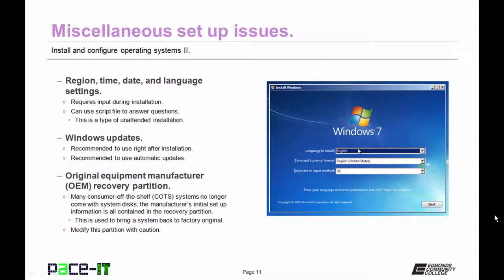When setting up a PC, remember you need to know what region you're in, the time, the date, and what language settings you're going to use. These are required inputs during installation, and you can use a script file to answer those questions. Then there's Windows Update — it is recommended that you run Windows Update right after installation to make sure everything is current. It is also recommended that you automate updates by setting a time and allowing the process to become automated.